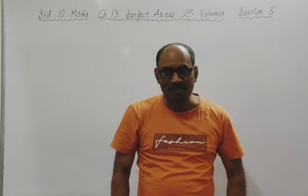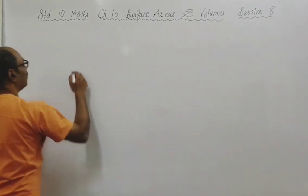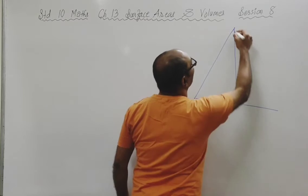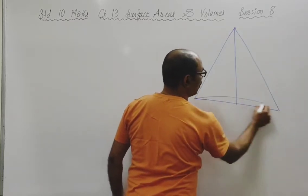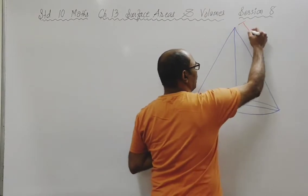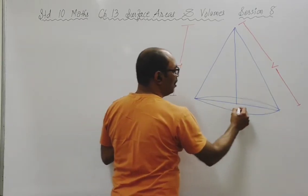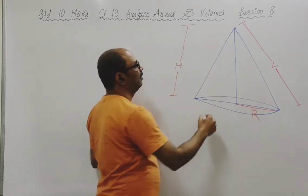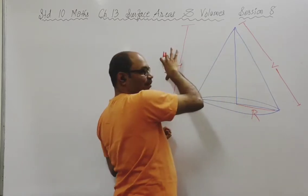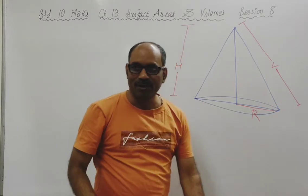I will draw the frustum of cone and show how we get a frustum of cone from a cone. This is the original cone. I am going to call its slant height as capital L, its height as capital H, and its radius as capital R.